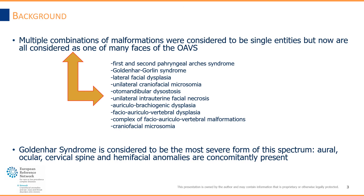As you can see from the list, these were some of the names given historically to parts of these combinations. One of the most famous is Goldenhar syndrome, considered to be the most severe form of this spectrum. In patients affected by Goldenhar syndrome, aural, ocular, cervical spine, and hemifacial anomalies are concomitantly present.